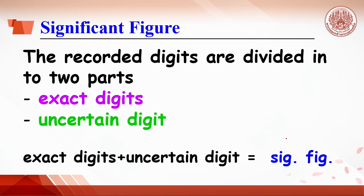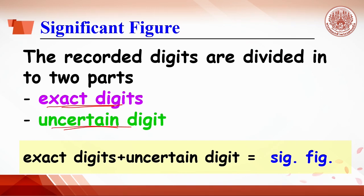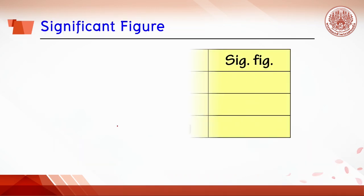The digits recorded can be divided into two parts: exact digits and the uncertain digit. Exact digits are obtained from the markings of the measuring device that are read exactly, and there can be many exact digits. The uncertain digit is the one last digit estimated from the smallest scale of the measuring device. The total number of exact and uncertain digits is called significant figures.